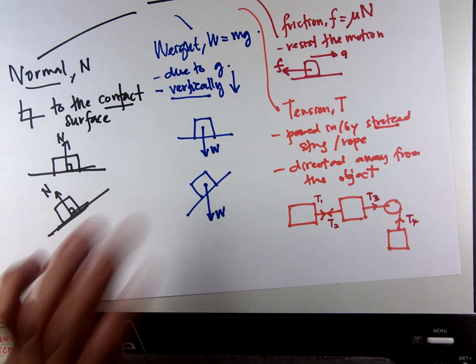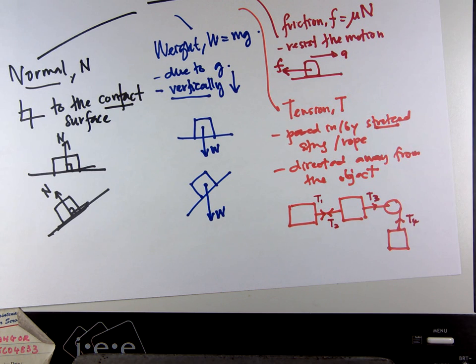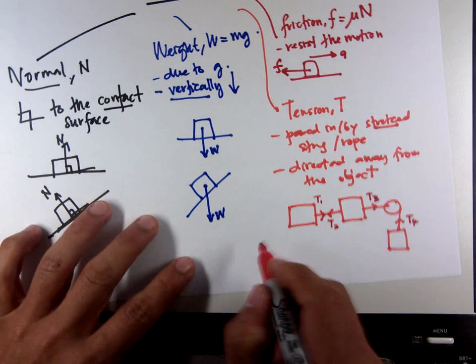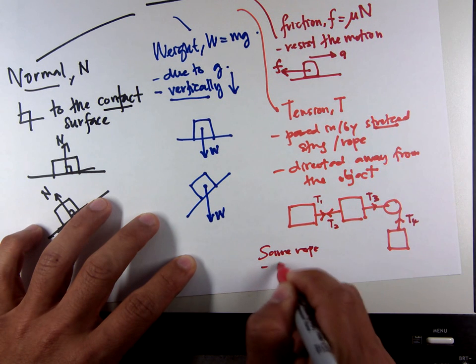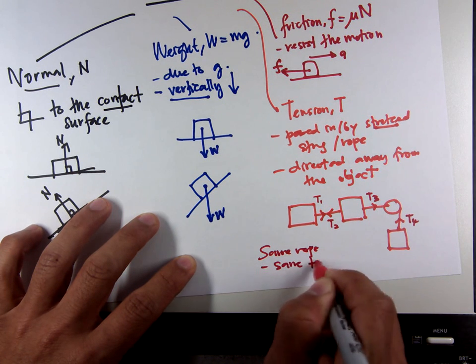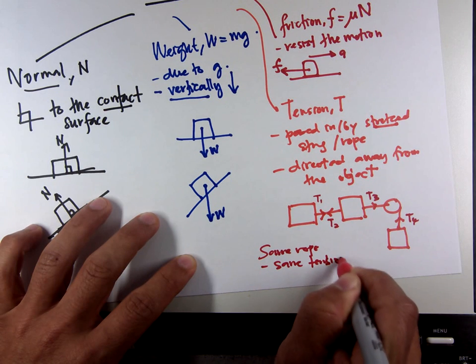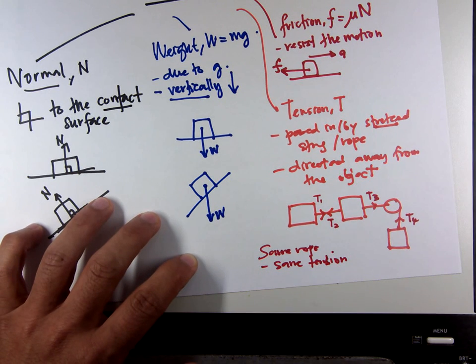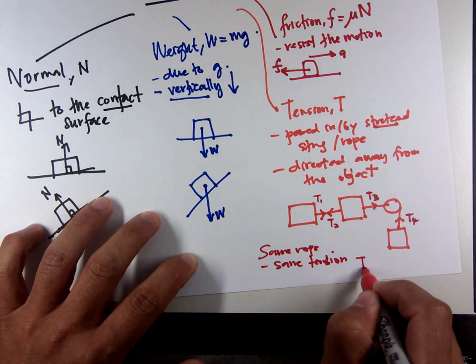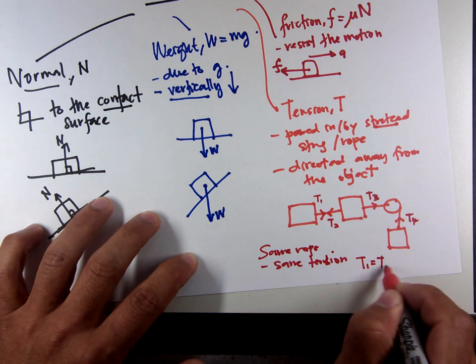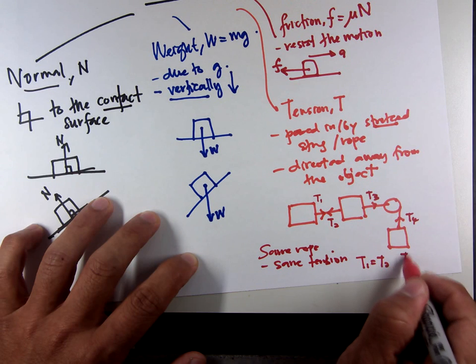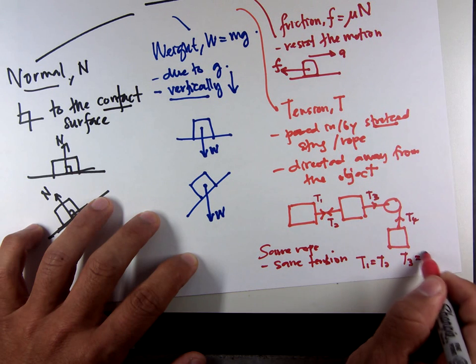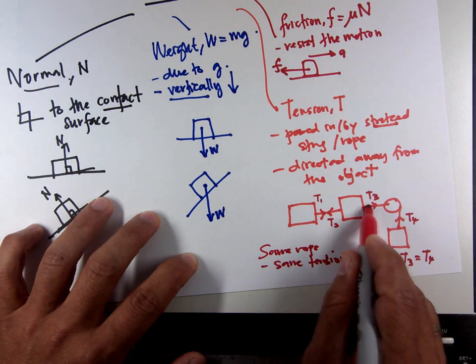The rule is same rope, you have same tension. Or string, same tension. In this case, you can see T1 equals T2, and T3 equals T4. Same rope, same rope.